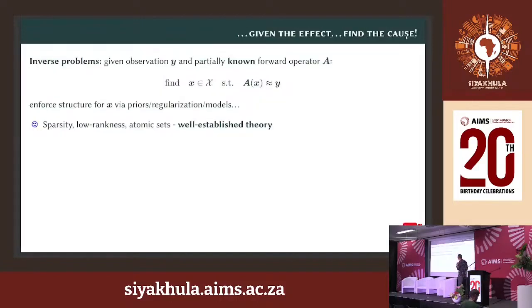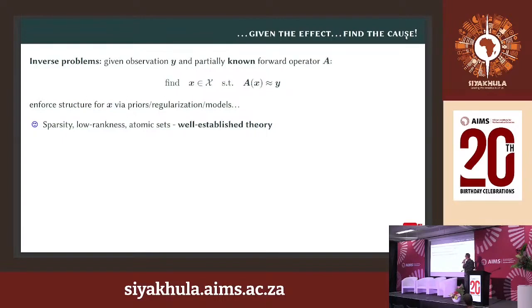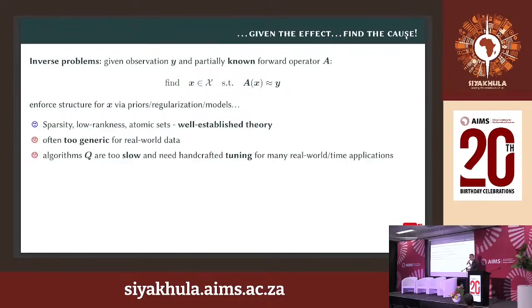This talk is about inverse problems and data science. A typical setup is that we observe something — we see an effect and want to understand where it comes from. We have a forward model and want to find the causes producing this effect. There's a lot of theory about this; we can assume structure on our unknown object X, using priors, regularization, or enforcing models — well understood in compressed sensing, where structure assumptions include sparsity or low-rank atomic sets. But these are mathematical models, and the real world is often much more complicated.